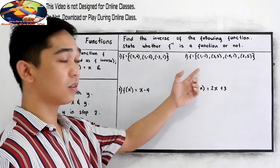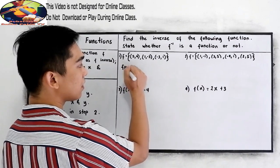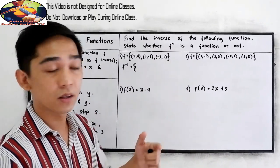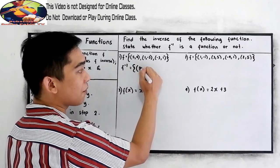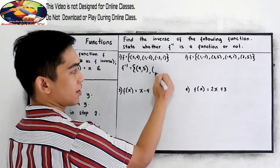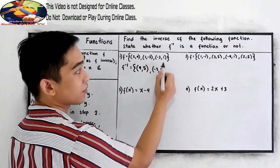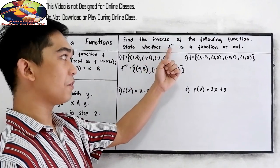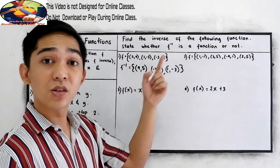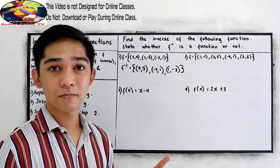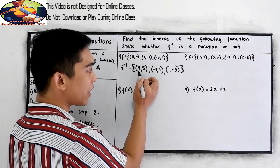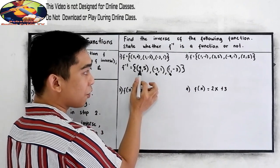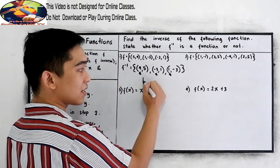Number 1 and 2, we have ordered pairs. To find f inverse, all we need to do is interchange x with y. So that will become (4, 5), next (negative 3, 1), next (1, negative 3). Now, to state whether f inverse is a function or not, no domain must be repeated. Check the domain — the x-coordinate must not be repeated. So we have 4, negative 3, and 1. That means this is a function.